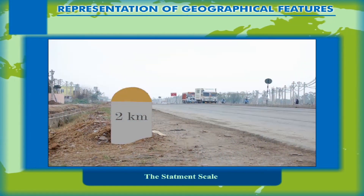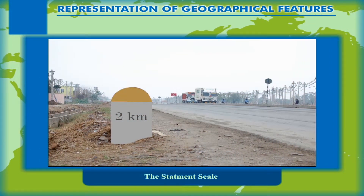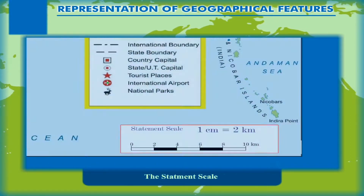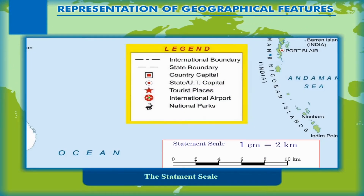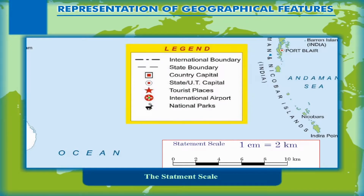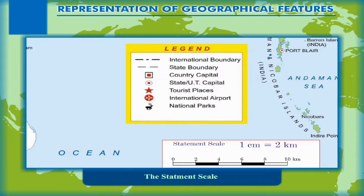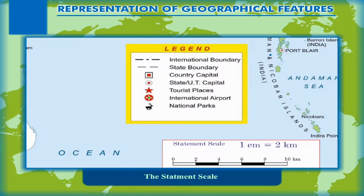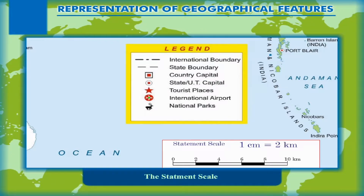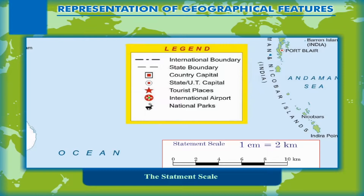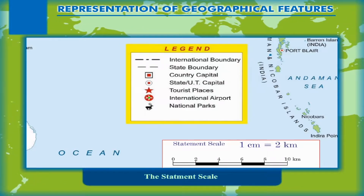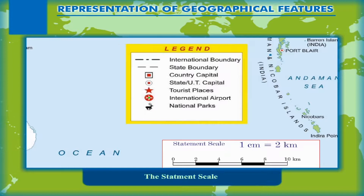For example, the statement scale is written as: one centimeter is equal to two kilometers, meaning one centimeter on the map equals two kilometers on the ground. Some examples of statement scale are: one centimeter is equal to 2,500 kilometers, and one inch is equal to 200 miles. However, this scale has a disadvantage — it cannot be used universally in all countries, as all countries do not use the metric system or any universal unit of measurement.